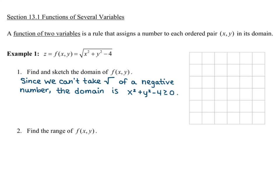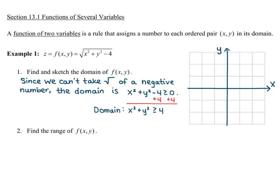I want to get this into a format that I'm used to graphing. I can see that x squared plus y squared gives me a circle, and I want to figure out the radius. Adding 4 to both sides, I get x squared plus y squared is greater than or equal to 4. That's going to be my domain. I'll put it on my xy-plane, and I know that circle has a radius of 2.